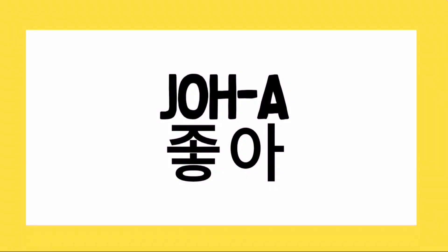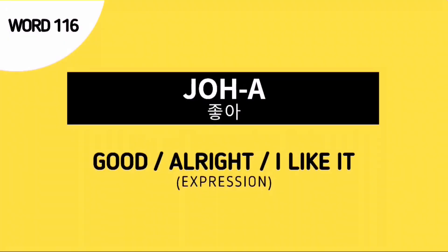This is pronounced as a two-syllable word. The first syllable is CHOW, the second syllable is A. Pronounce it with me: CHOWA. CHOWA is an adjective, and this is used to say 'oh that's good,' 'that's alright.' It is also used to say 'I like it.'